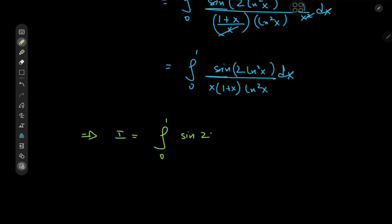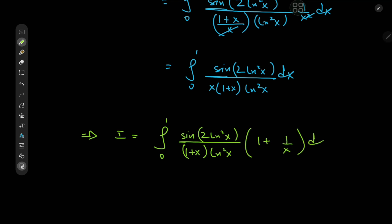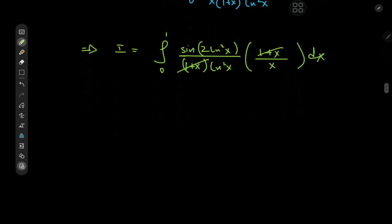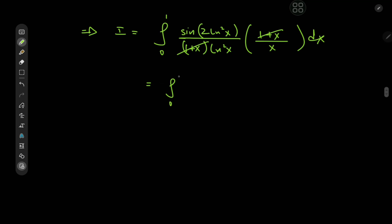We factor out from the integrand the common terms — sine two log squared x up top and one plus x times log squared x in the denominator — and we're left with one for the first integrand and one over x for the other, which gives one plus x over x and again some nice cancellation. So we have the integral from zero to one of sine two log squared x divided by x times log squared x dx.